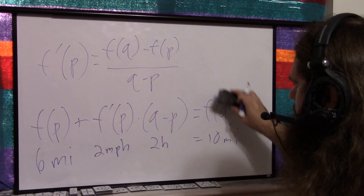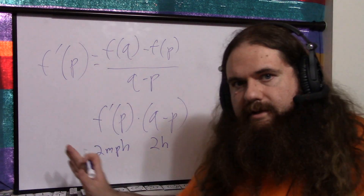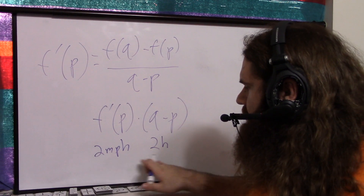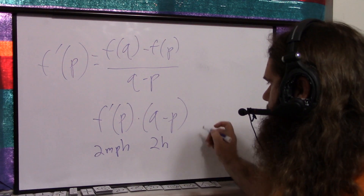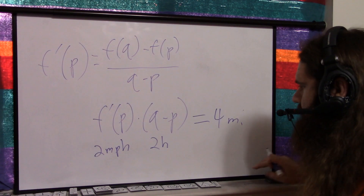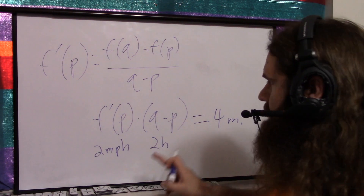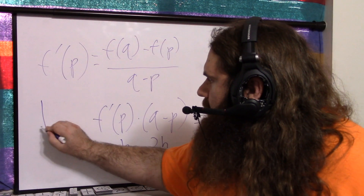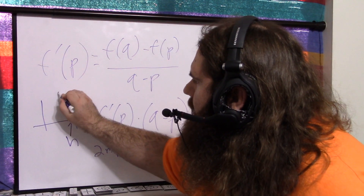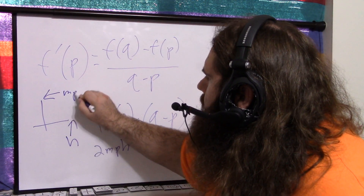But if we take away the starting and ending values, we get just the accumulation. Wherever we start, if we go this fast for this long, we go — in this case — four miles. The integral from p to q of this function is four miles. We have our plot: the x-axis is hours, the y-axis is miles per hour.